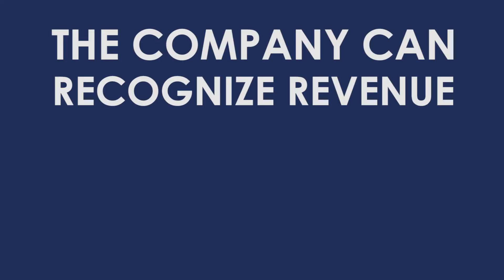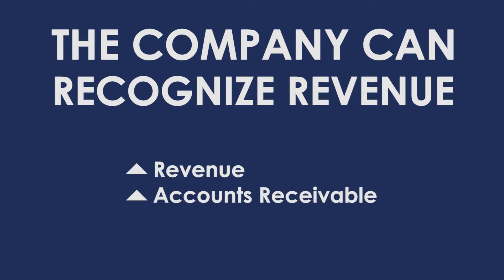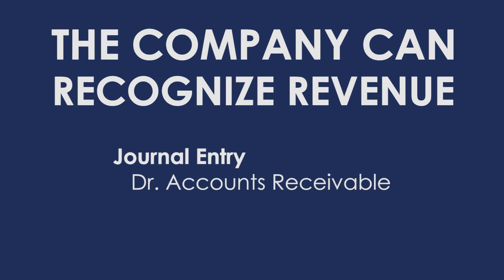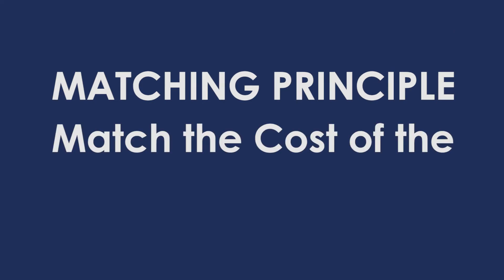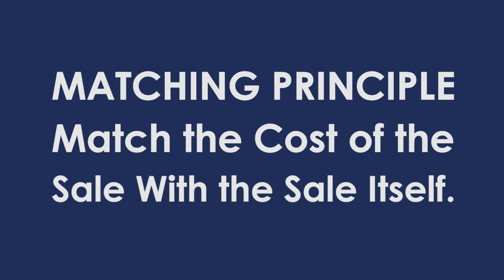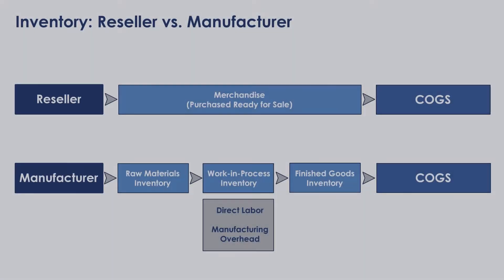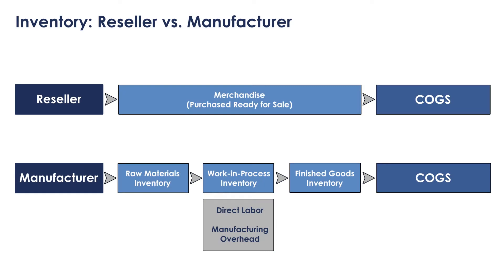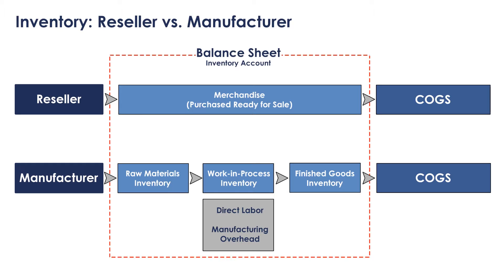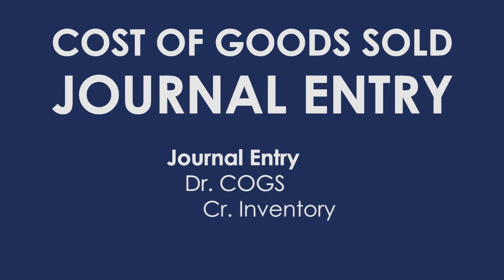Next we'll move on to the sale of this good to a customer. We're going to say that Amazon gave me terms to buy the product — it'll make things a little more interesting. When they sell this to me, the company can recognize revenue, resulting in an increase in both revenue and accounts receivable. The journal entry would be to debit accounts receivable and credit revenue. Next we need to match the cost of the sale with the sale itself. Whether the company is a reseller or a manufacturer, once a sale is made the value of that good transfers from the balance sheet to the income statement. The journal entry for inventory would be to debit COGS and credit inventory.